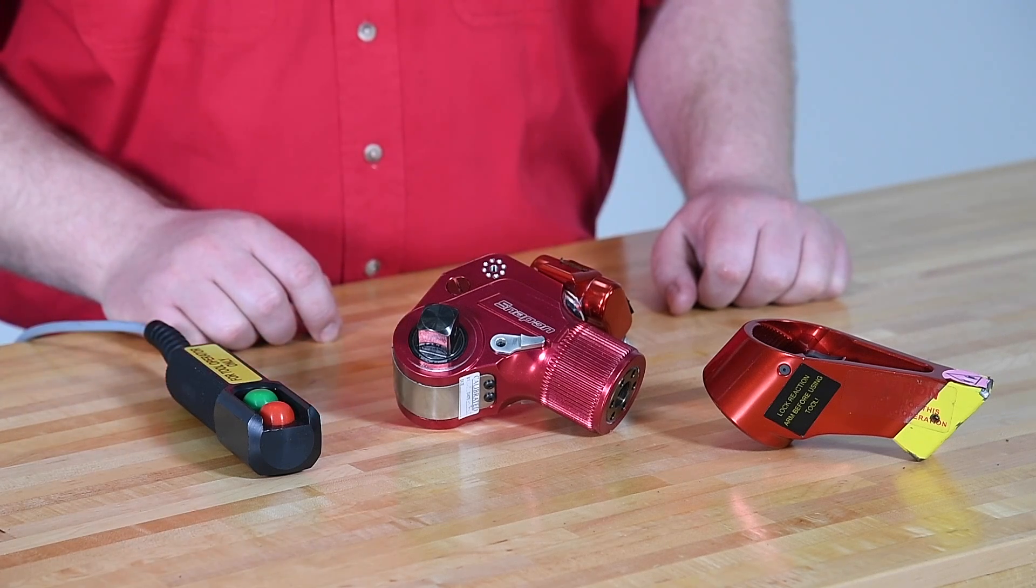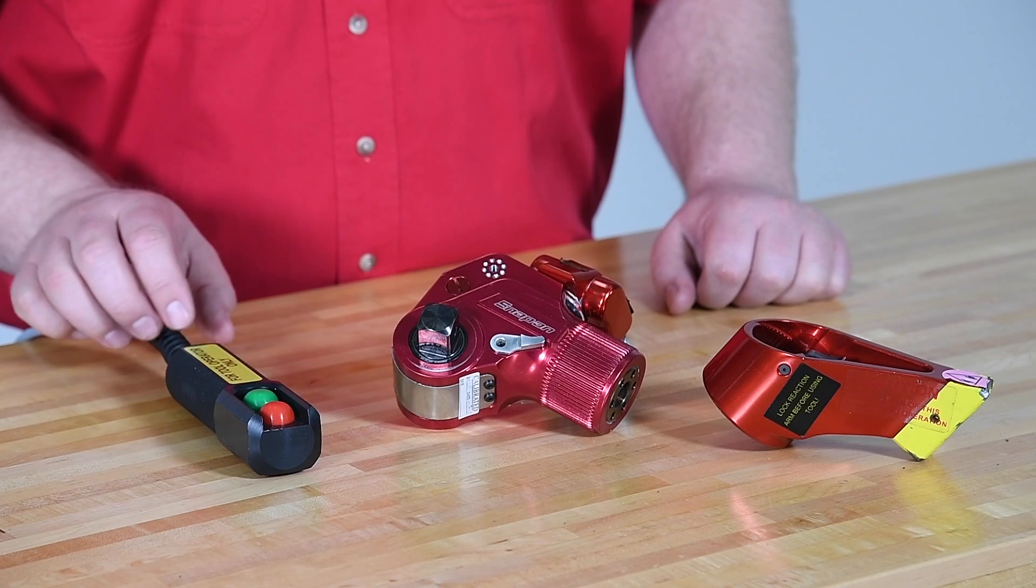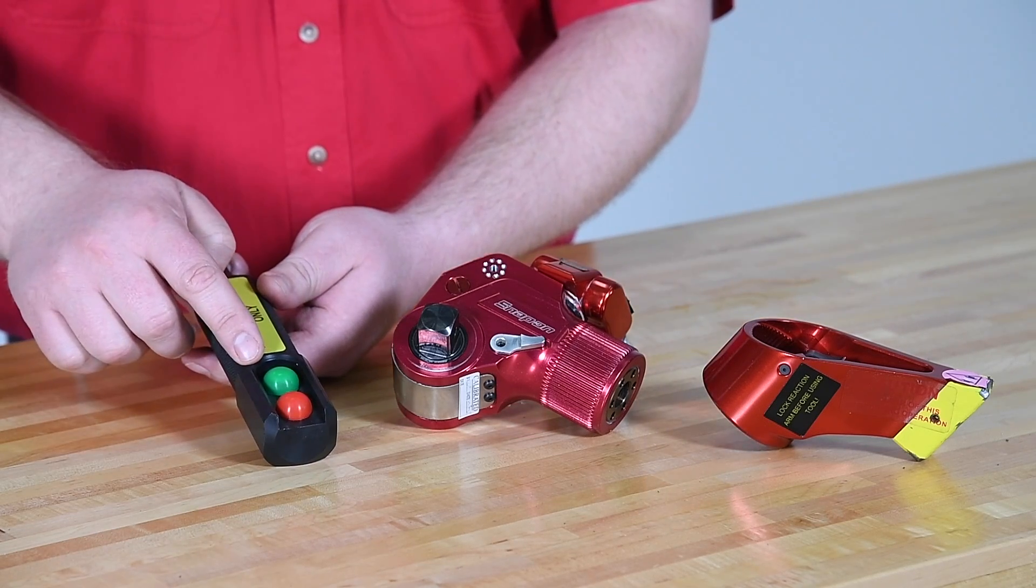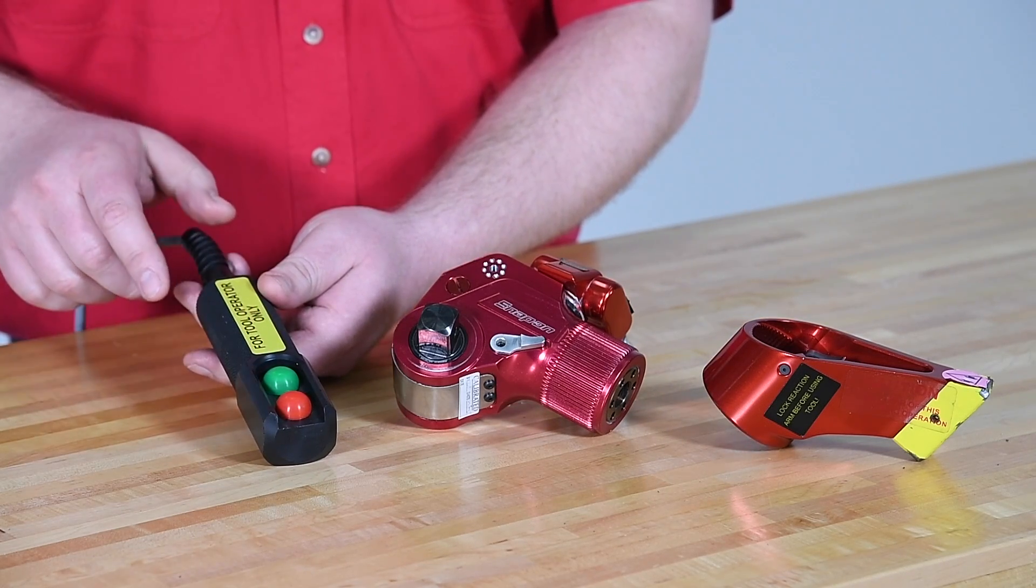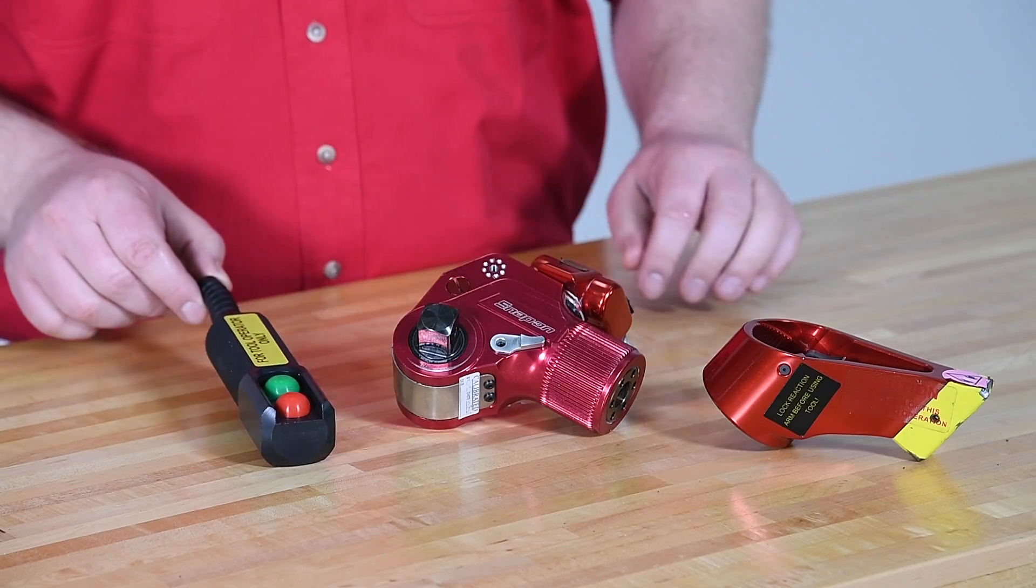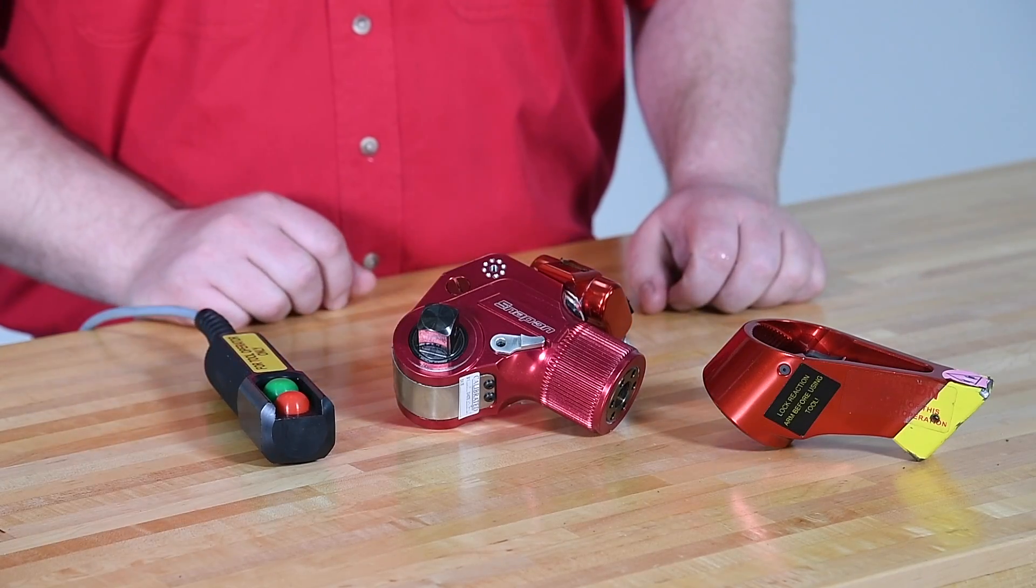Hydraulic pressure is supplied to push the piston forward and turn the ratchet mechanism when the green control button is engaged. And when the button is released, oil flow is reversed, returning the piston to its starting position.